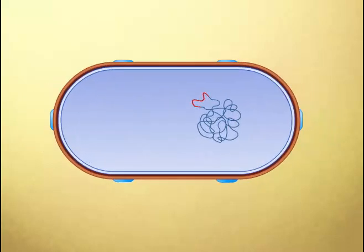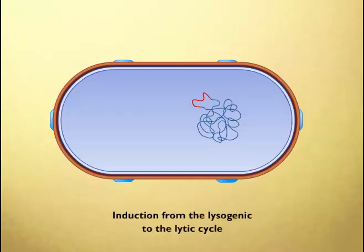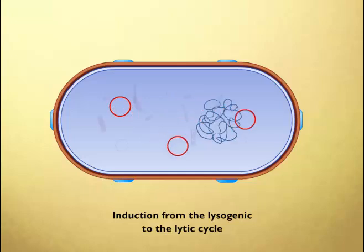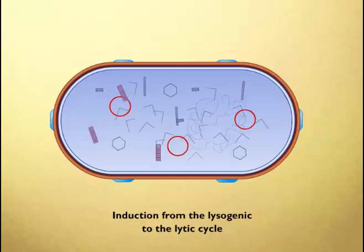When the cells are exposed to ultraviolet light, or to certain chemicals, phage induction occurs. The prophage DNA is excised and the phage enters the lytic cycle.